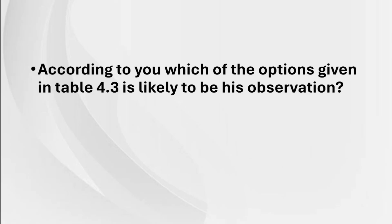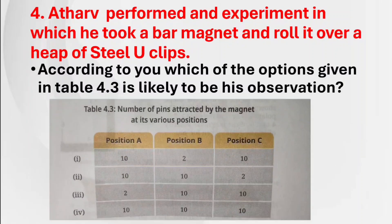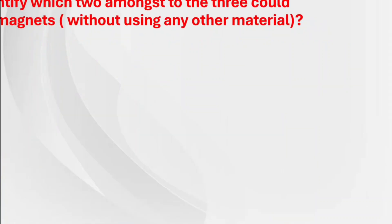According to you, which of the options given in table 4.3 is likely to be his observation? Atar performed an experiment in which he took a bar magnet and rolled it over a heap of steel U-pins. The correct answer is the first option: position A — 10 U-pins, position B — 2, position C — 10.